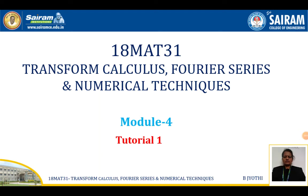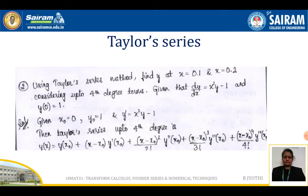Hello and welcome to the lecture session. In today's video, I am going to do Tutorial 1 in Module 4. In this tutorial, a number of problems will be discussed. Coming to the Taylor series method: using the Taylor series method, find y at x = 0.1 and 0.2, considering up to fourth degree terms, given that dy/dx = x²y - 1 and y(0) = 1 as the initial condition.